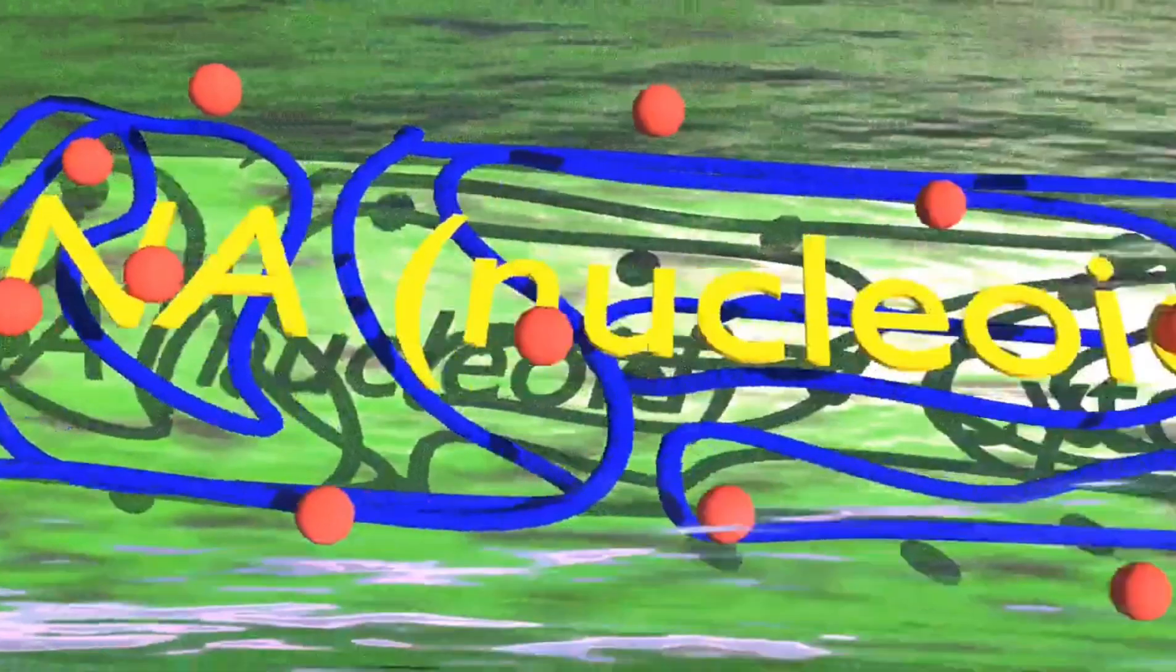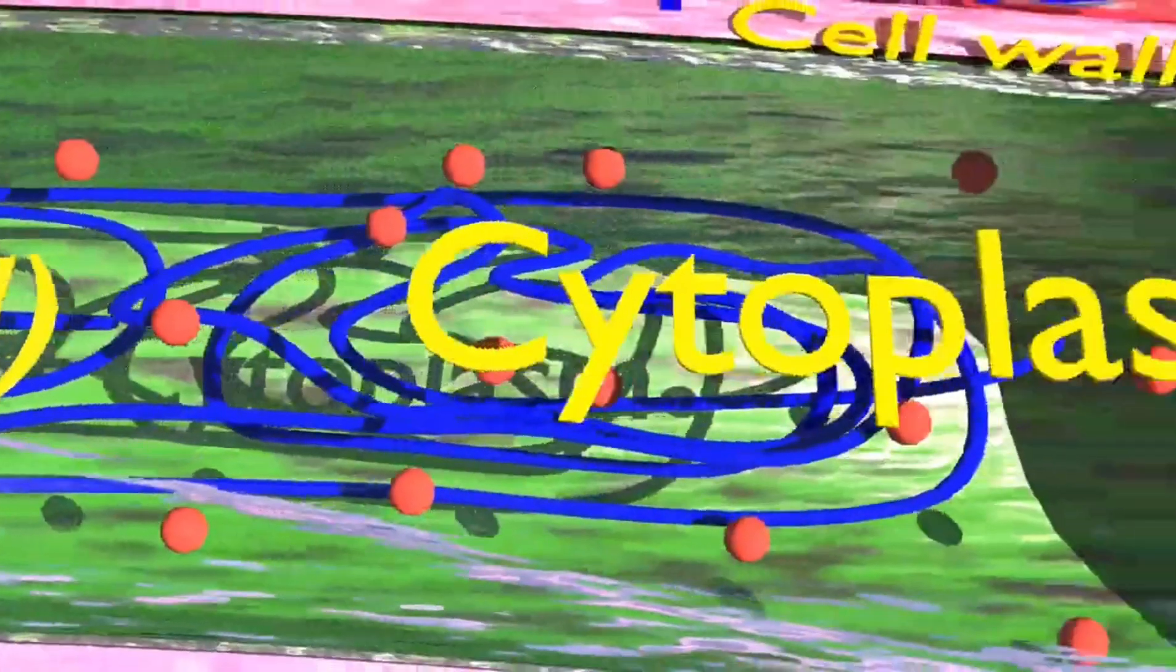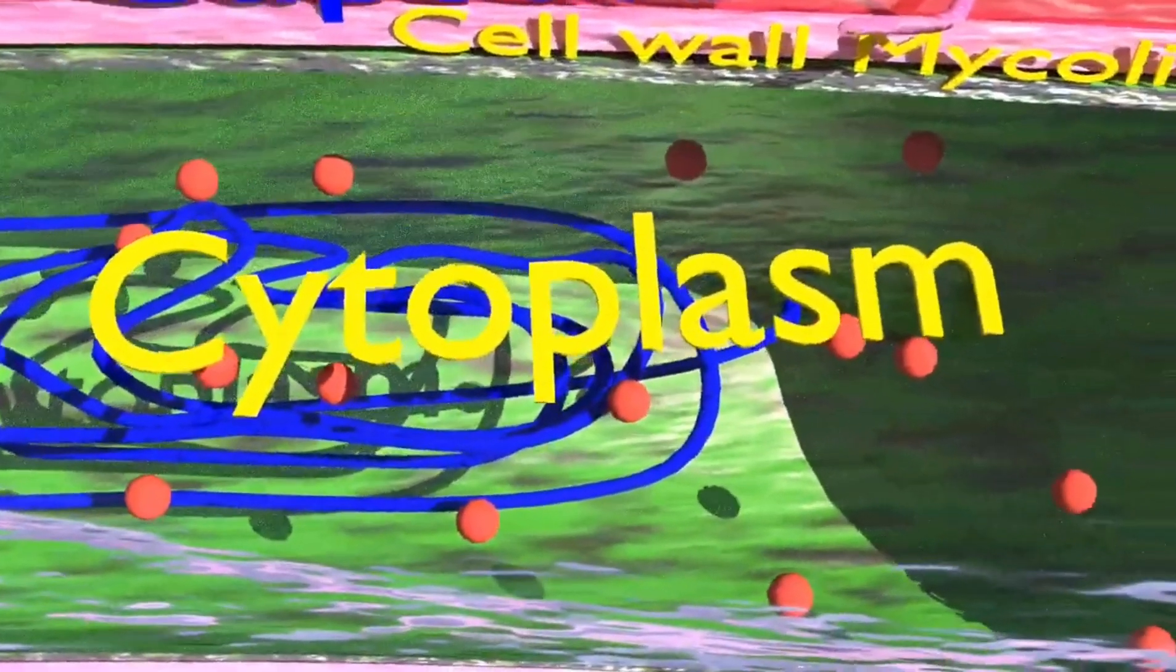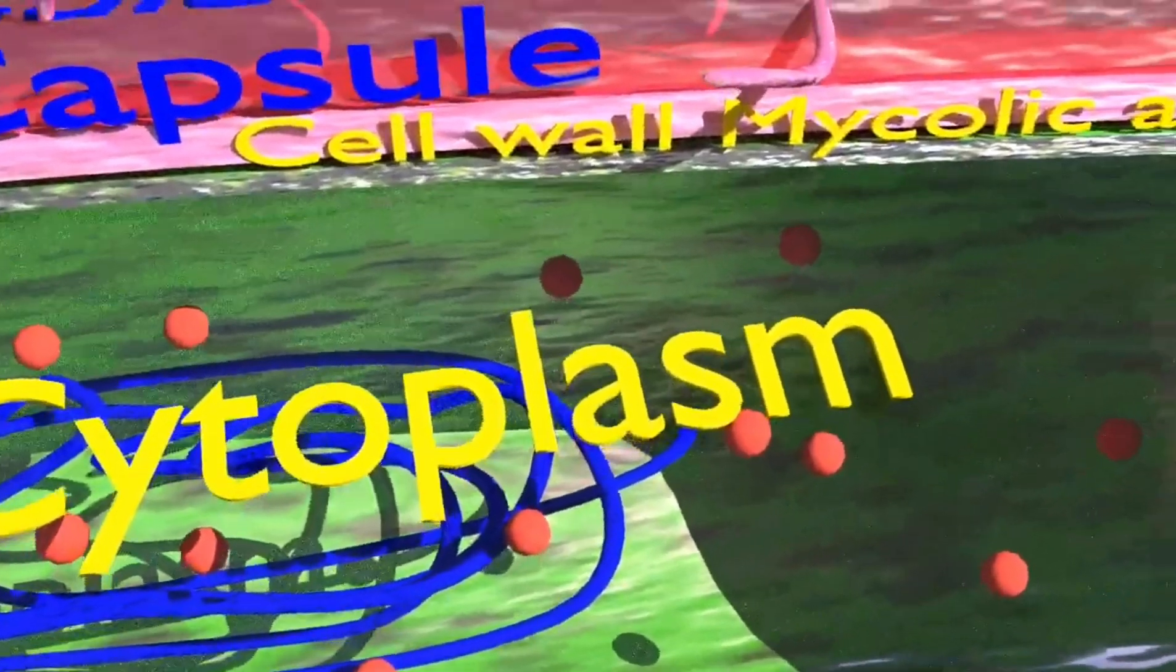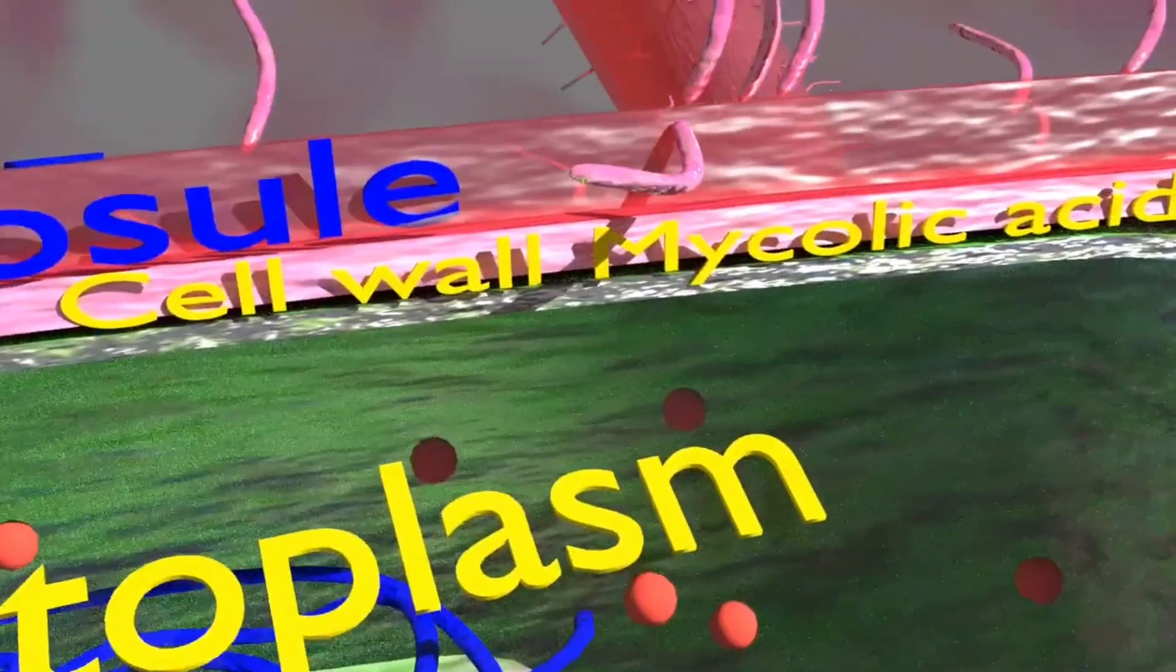Tuberculosis bacilli also has the same parts as that of a normal cell, i.e. ribosome, cytoplasm, cell wall, cell organelles and DNA. Only exception is the pili.